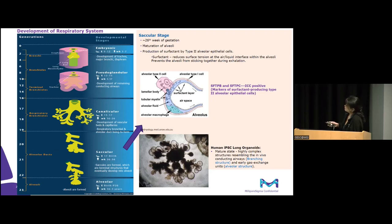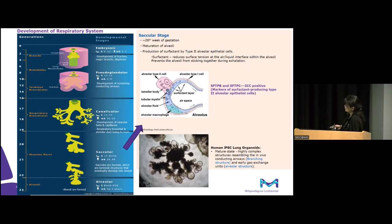Today's talk is really about how we can take human iPSCs — induced pluripotent stem cells — and differentiate them in a stepwise manner into lung organoids that we believe really resemble the developing lung at the saccular stage. It's at this stage that you start to see highly complex structures resembling the in vivo conducting airways — very complex branching structures and also early gas exchange units with alveoli structures.